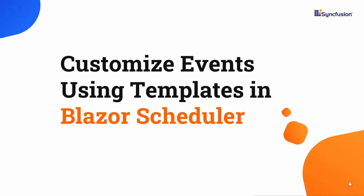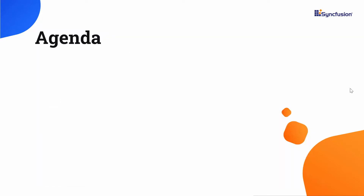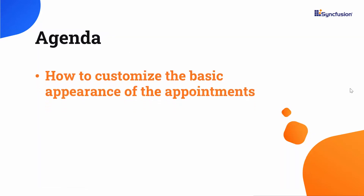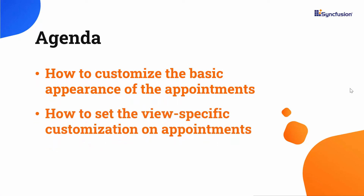Hi everyone, welcome back. In this video, I will show you how easily you can change the look of the appointments using the built-in template option available in the Blazor scheduler of Syncfusion. Look at this example where you can see the completely customized appointments with attractive colors and images. I am going to explain how to customize the basic appearance of the appointments and how to set the view-specific customization on appointments. Now I will move on to the example to show you how to customize the appointments with the template option.